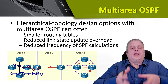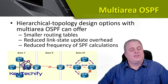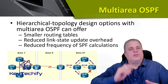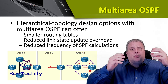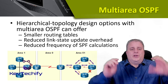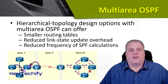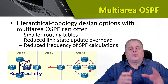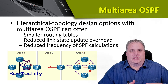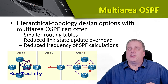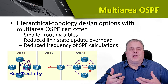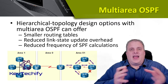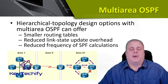Because you're only concerned about changes within your area, you only have to do updates for your area. If there's a change in a different area, you don't need to update all your tables and rerun the algorithm. This also leads to a reduced frequency of shortest path first calculations, since you're only concerned about the localized impact of changes. Link state advertisements stop at an area boundary.